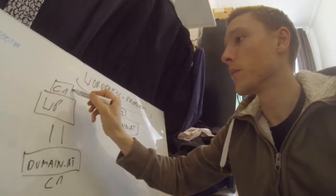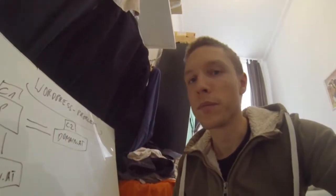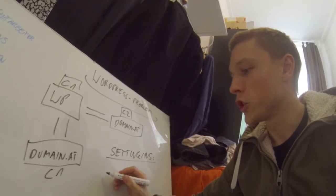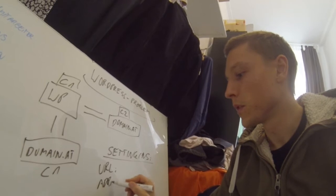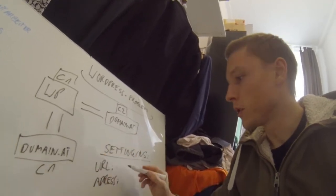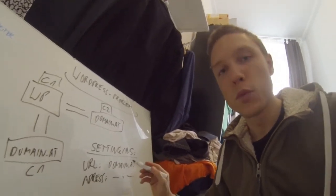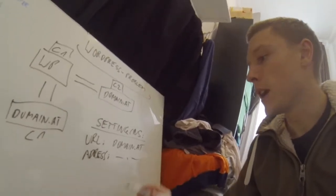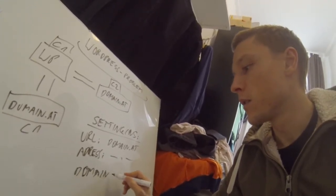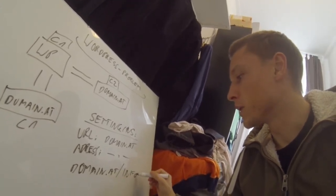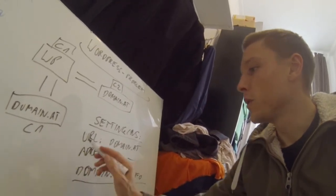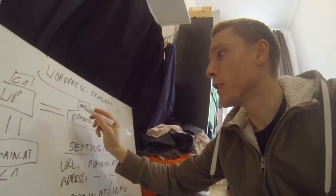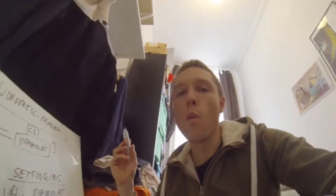If I now try to connect them, the whole thing doesn't work. Normally I would go into the settings and change the URL and the address to domain dot at, and do the same on both sides. That's what I did every time and it worked fine when using the same company - I'd get clean domain paths. But now when I do this, the whole site crashes. It must have something to do with having the domain bought at a different company. Do you know what the problem is and how I can solve it?